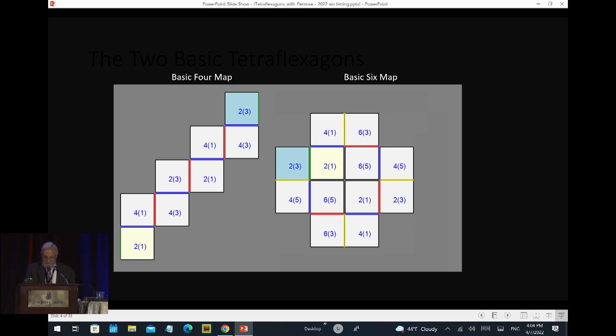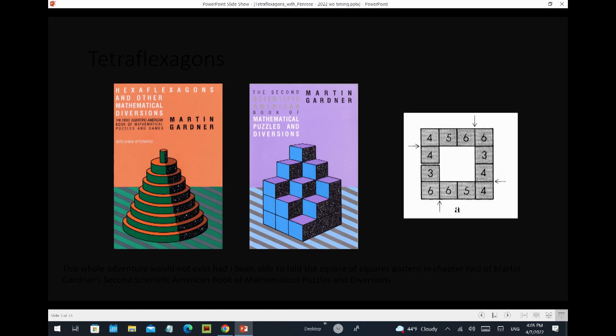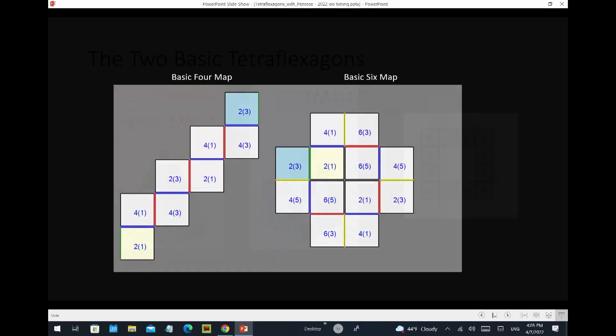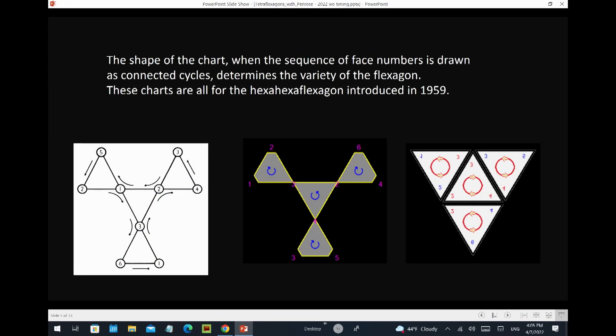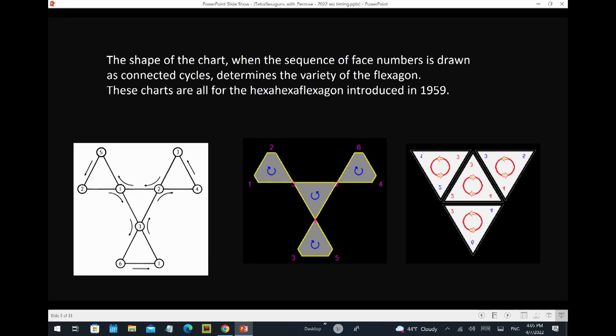It didn't work so I came up with these. Now what constitutes a new variety? A new variety of a flexagon is defined by the sequence in which they show their faces. The sequence in which they show their faces is drawn as what was called a Tuckerman traverse in 1959.